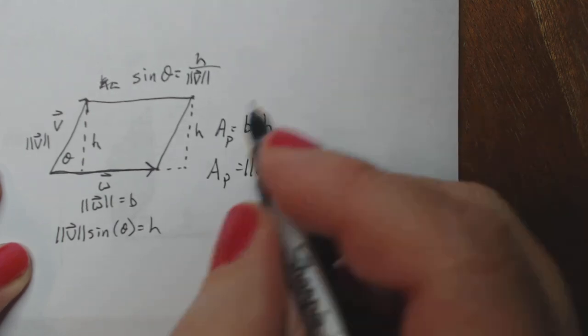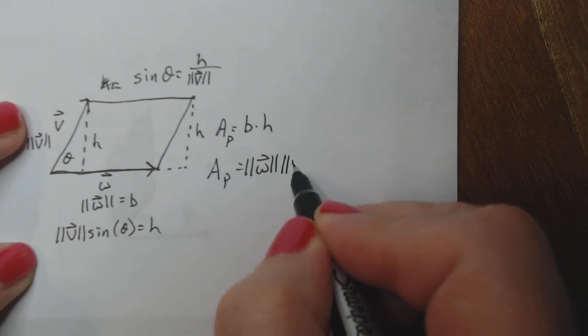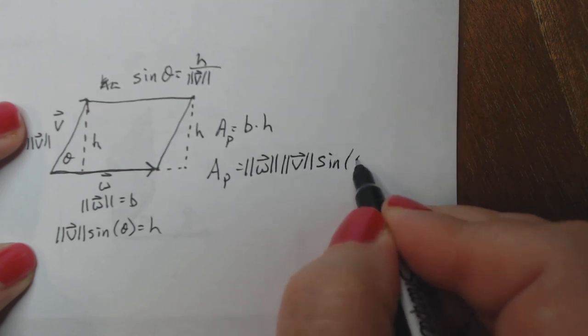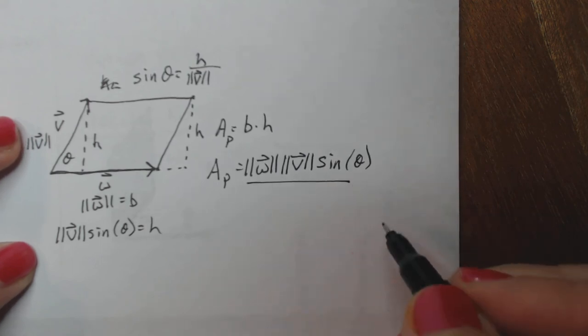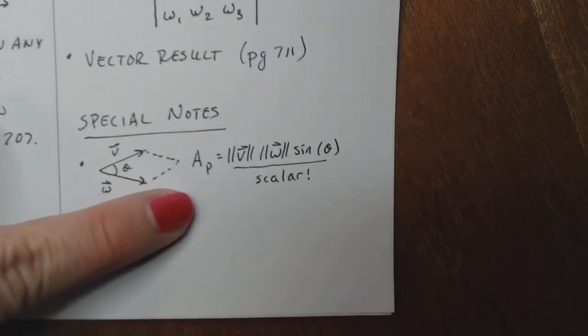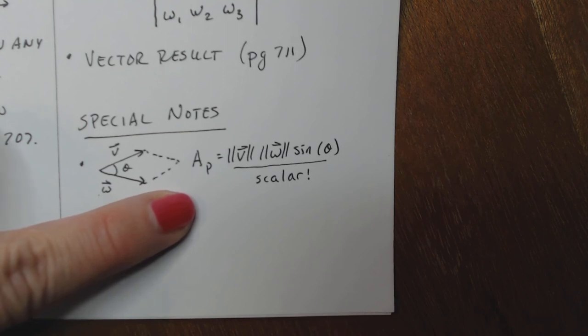So the magnitude of V times sine theta gives me the height. So that's what I'm going to put right here. The height is the magnitude of V times sine of theta. That looks familiar. It should. There it is. Very easy to prove and very easy to understand.